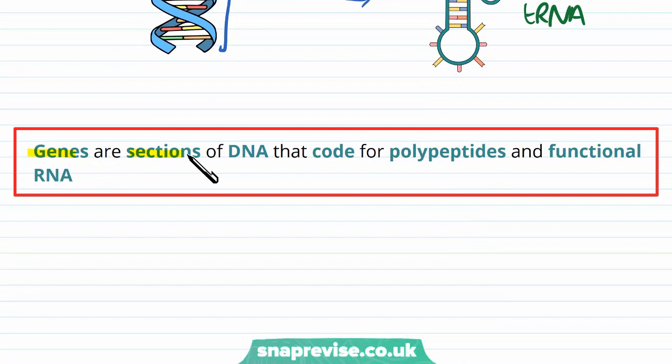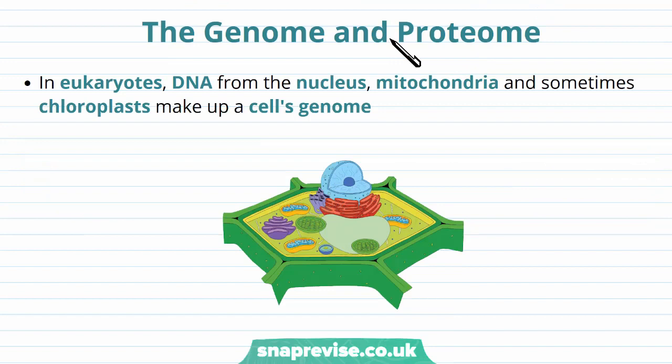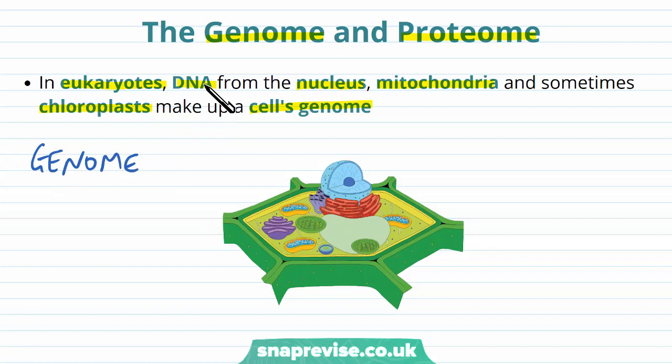We need to now be aware of two other concepts: the genome and the proteome. In eukaryotic cells — cells with a nucleus found in animals and plants — DNA from the nucleus and the mitochondria and the chloroplasts, if they're present, make up the cell's genome. So the genome basically refers to all of the DNA or genetic material and instructions in the whole organism or in a whole cell. The DNA is found in the nucleus, it's found in mitochondria as a circular loop, and it's found in chloroplasts if they're present.